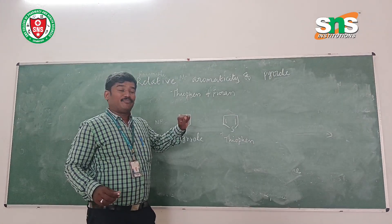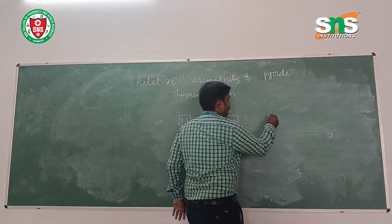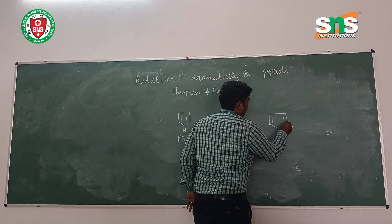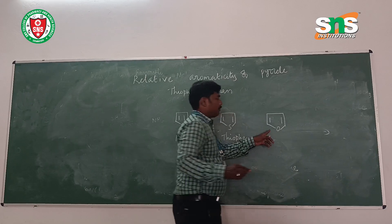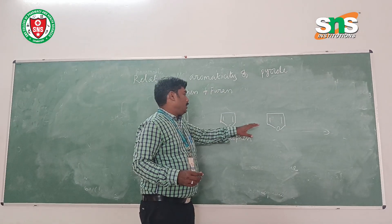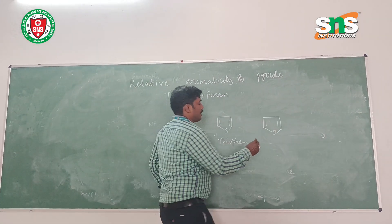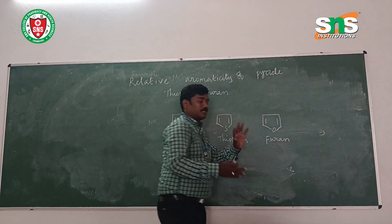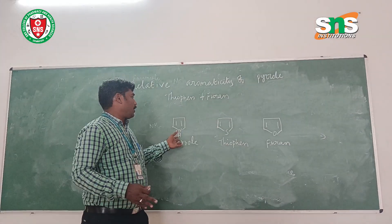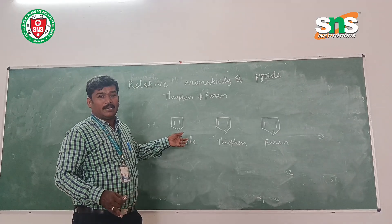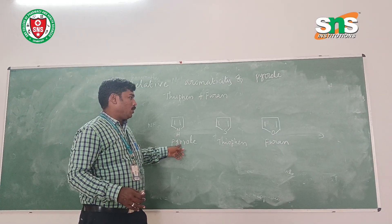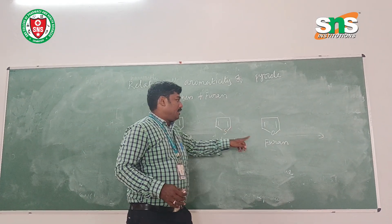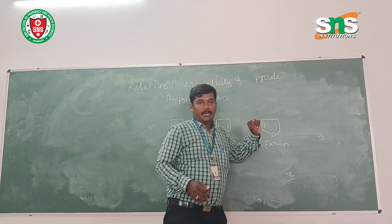Third one will be furan. Furan is also a five-membered ring in which the heteroatom will be oxygen. So all these three compounds are five-membered rings. The only difference is the heteroatom present: nitrogen for pyrrole, sulfur for thiophene, and oxygen for furan.